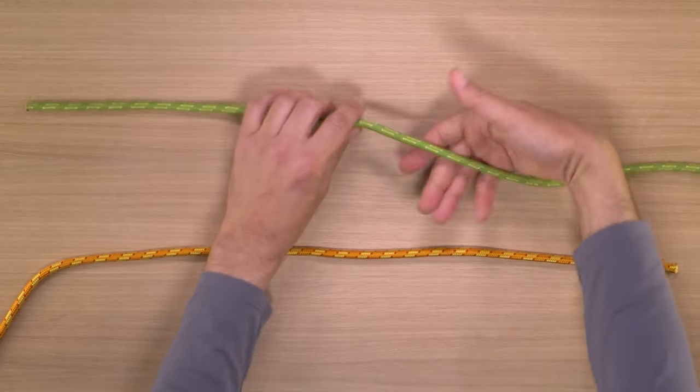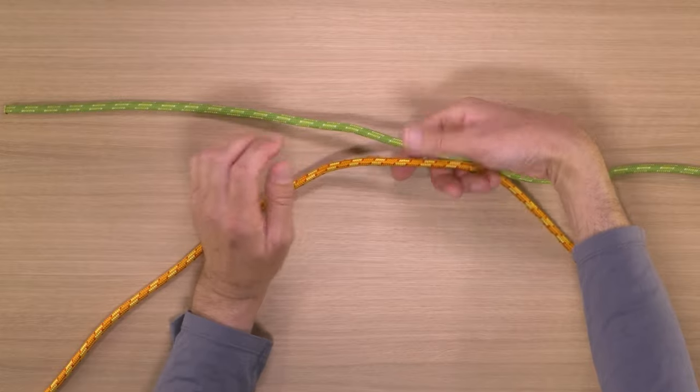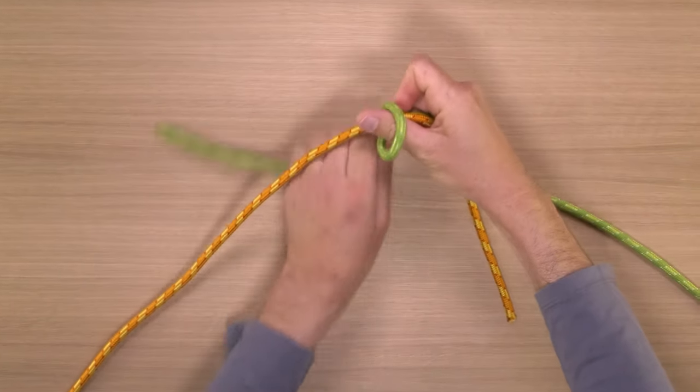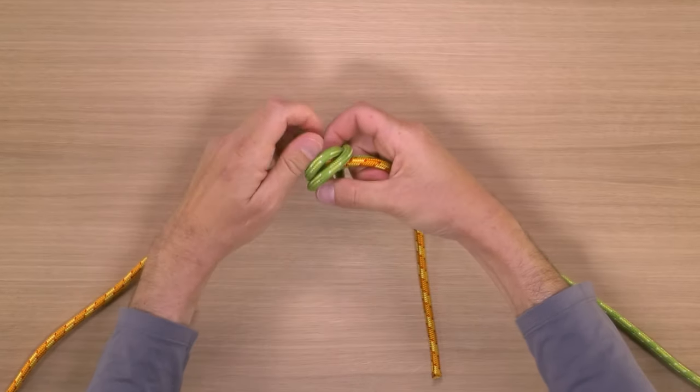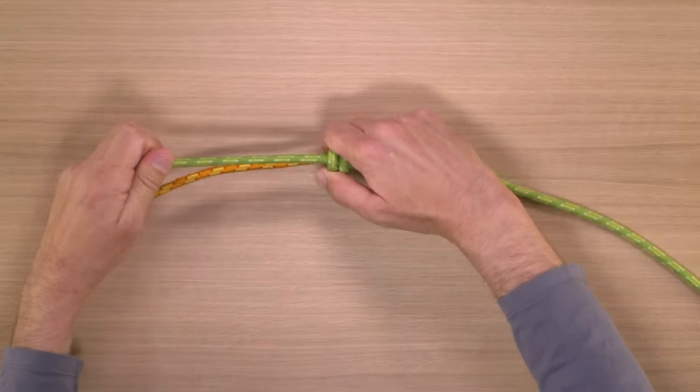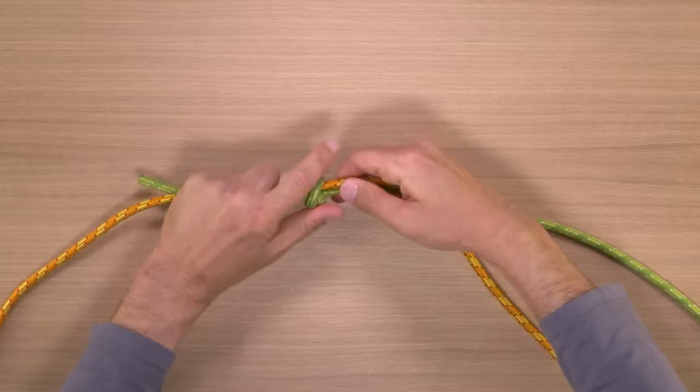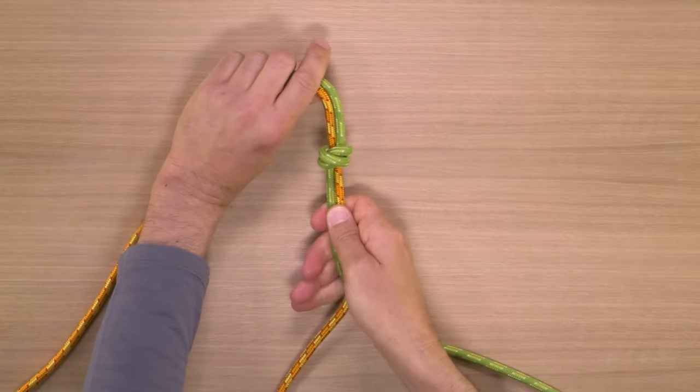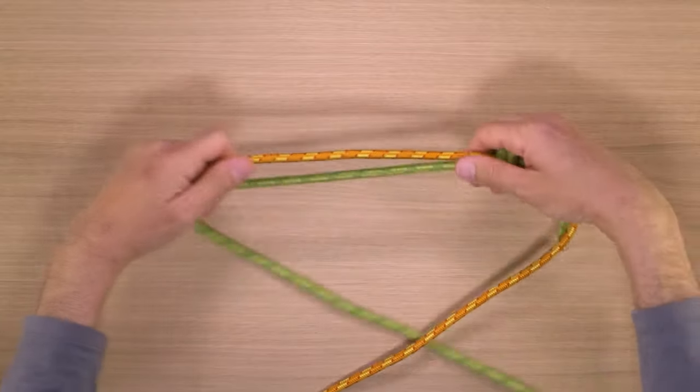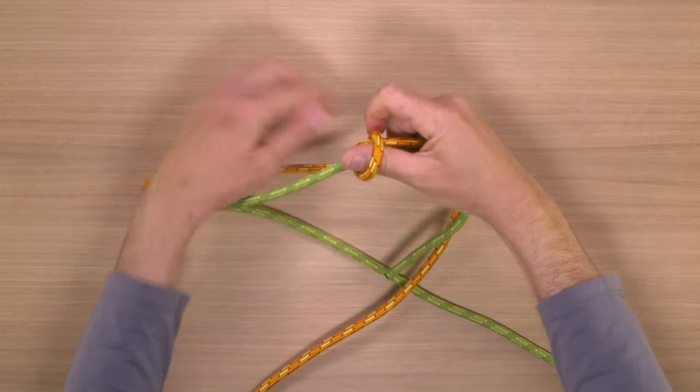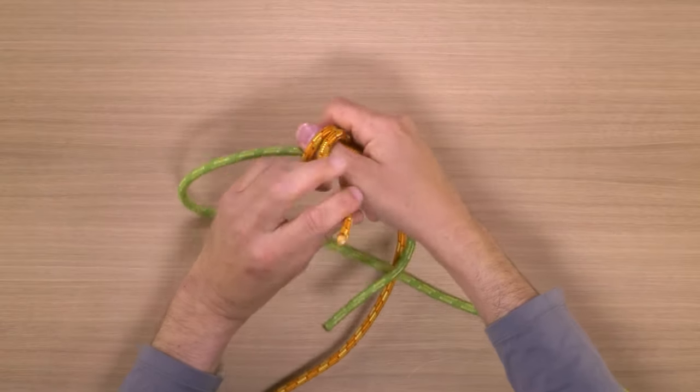A double fisherman's knot is the knot most commonly used to link your cordelette into a loop. It starts with a double overhand tied with one strand around the other. Make sure you get that X and equals sign. Then you take the other strand and do the same thing. Tie a double overhand going in the opposite direction with that strand around the first.